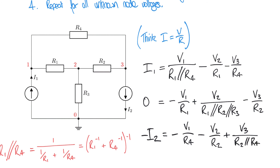We now have three simultaneous equations. Since this example used symbolic values R1, R2, etc., rather than numerical values, we'll leave it here. In our next videos we'll apply this same method to worked examples with actual values and explore how to solve these equations to find the voltages V1, V2, and V3.